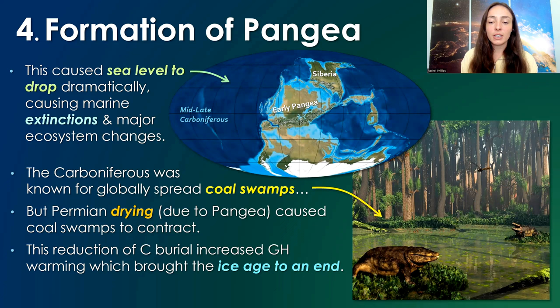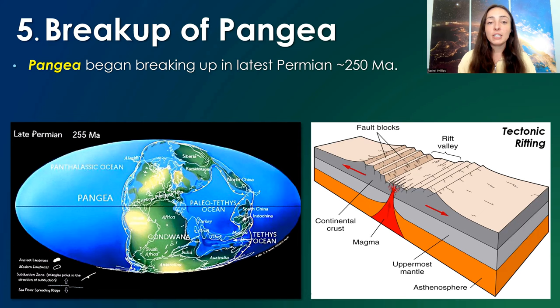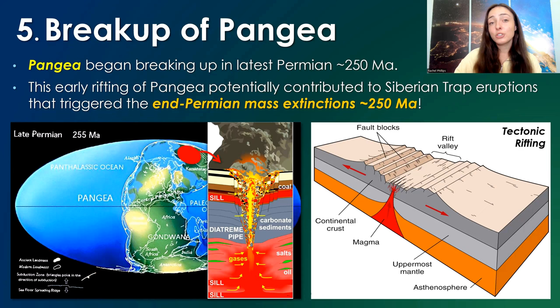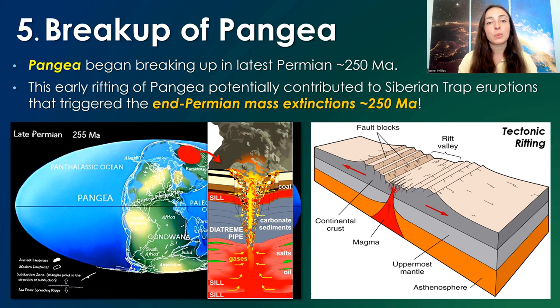This contraction of coal swamps also eventually caused enough of a decrease in carbon burial to bring us out of the ice age and into a period of warming, which eventually led to the greatest extinction event of the Phanerozoic at the end of the Permian — caused not only by warming due to the contraction of coal swamps, but also major volcanism. Pangaea then began breaking up in the latest part of the Permian around 250 million years ago, which may have contributed to triggering that volcanism, though there are also other hypotheses about how it was triggered in the Siberian Traps.